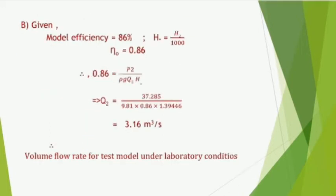Given model efficiency = 86% = 0.86, which implies 0.86 = p2 / (ρ g q2 h*), where h* = h2 / 1000. Substituting, q2 = 3.16 m³/s. Therefore, the volume flow rate for the test model under laboratory conditions is 3.16 m³/s.